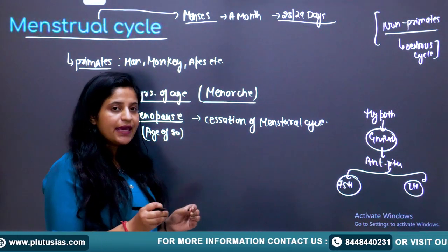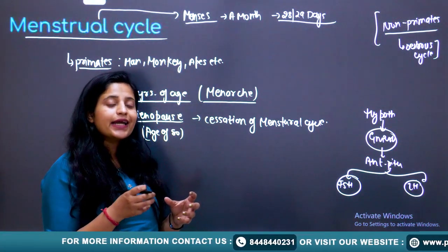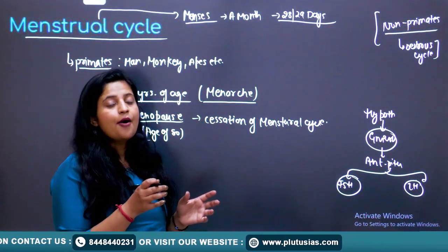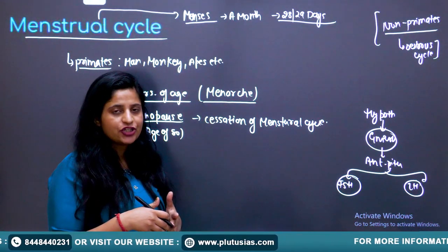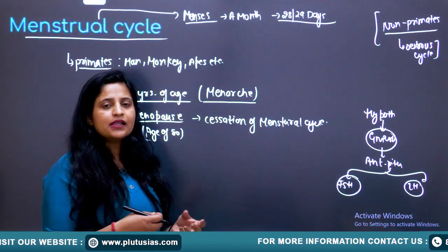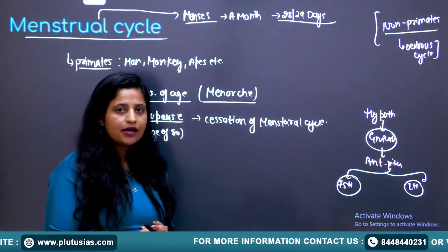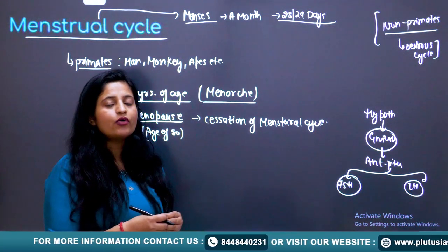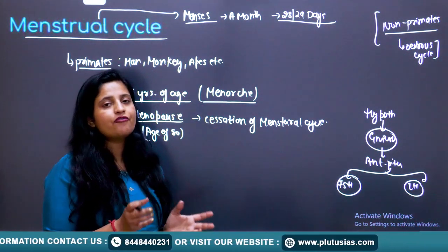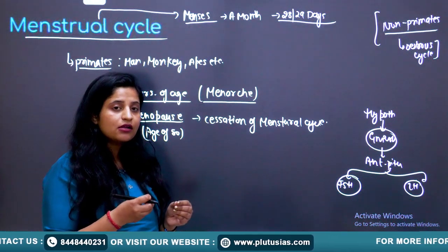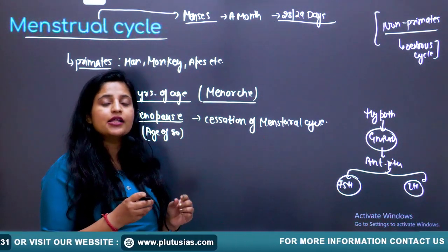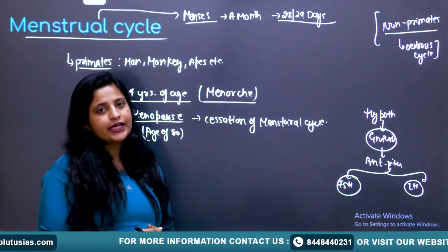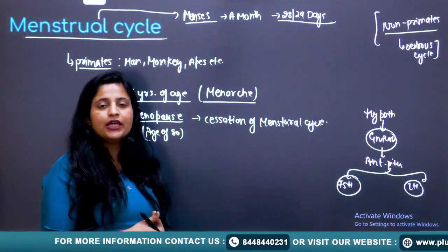When a baby girl was in her mother's womb, she had millions of primordial follicles, but these undergo atresia. At the time of birth only some lakh number of follicles are present, and when she attains puberty she has only around 50,000 to 70,000 follicles remaining in both ovaries, because follicular atresia continues.